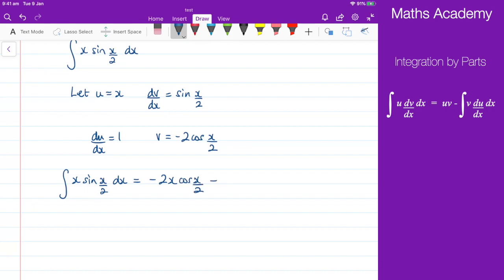subtract the integral of v du dx, which is negative 2 cosine of x over 2 with respect to x.